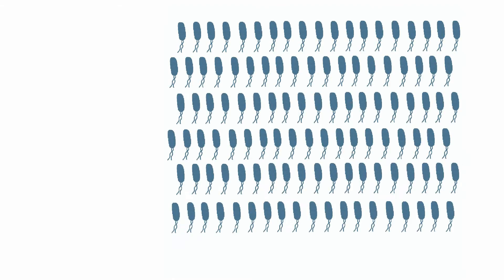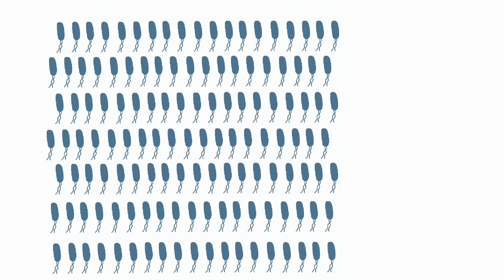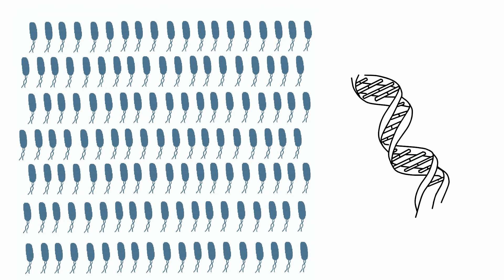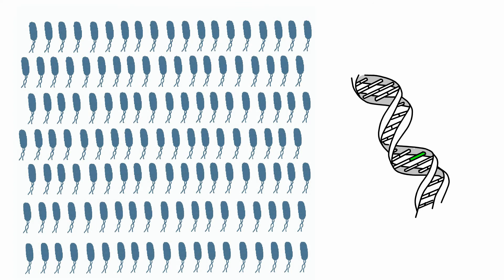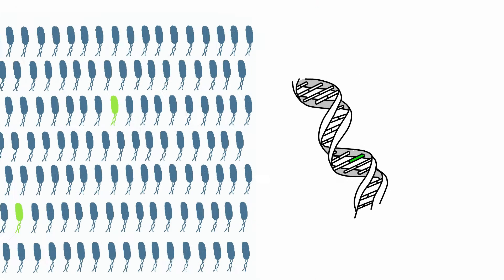Bacterial success as colonizers relies on their incredible adaptability and their huge numbers. Mutations, which are changes in the DNA code, occur spontaneously at a very low frequency, but large bacterial populations likely include individuals carrying mutations.